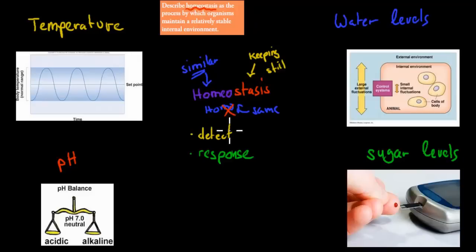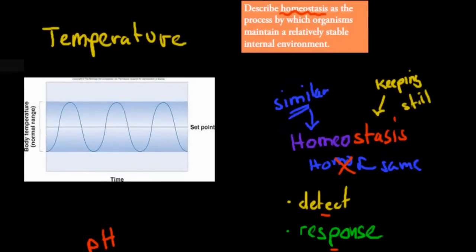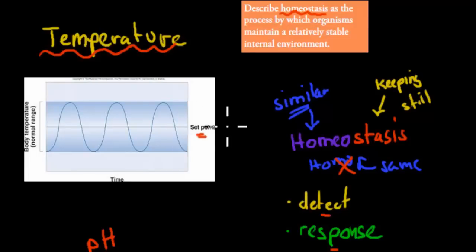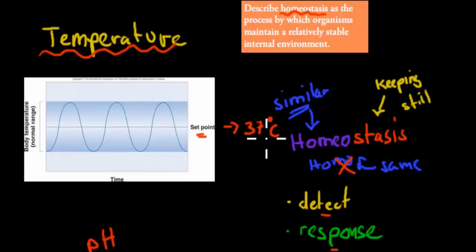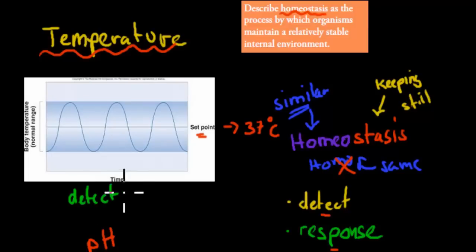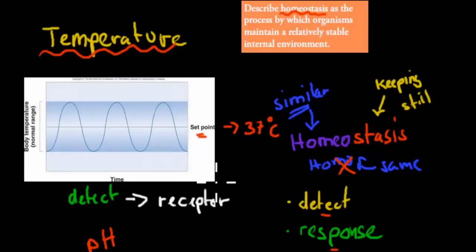I'm going to talk about detection and response for a few examples. First, temperature. We want to keep our temperature at that set point — the ideal point we want to have it at — which is usually about 37 degrees Celsius for humans. Now, if it goes too low or too high, we first have to detect that change. That happens at the receptors. Receptors are kind of our eyes in our body — they detect the change.